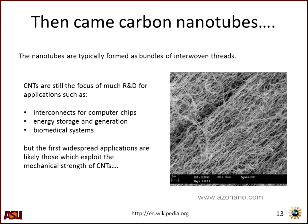Carbon nanotubes come in several forms: single-walled nanotubes as pictured, or nested multi-walled carbon nanotubes. They typically form as bundles of threads. The image shows a two-micron scale bar, illustrating how narrow, long, and twisted together they become. One of the big challenges was isolating individual nanotubes and measuring their electrical properties. People have now found ways to grow nanotubes from catalytic seeding to grow individual nanotubes and measure their properties.